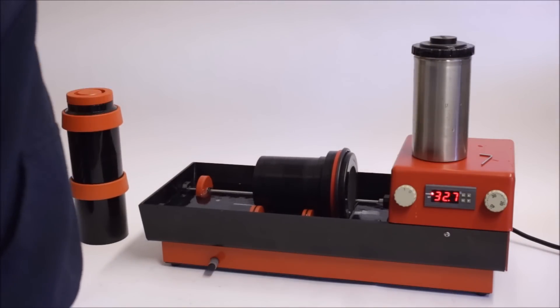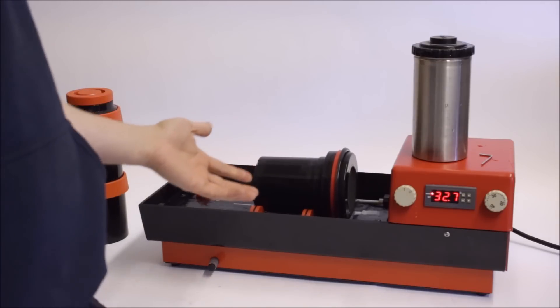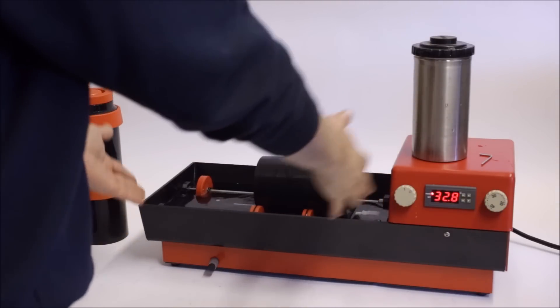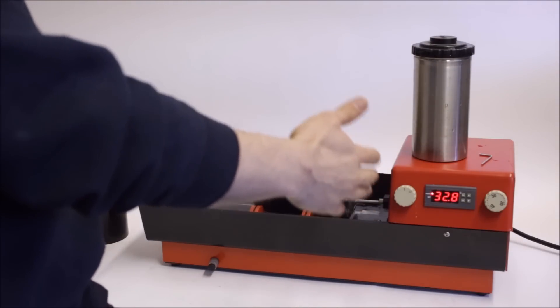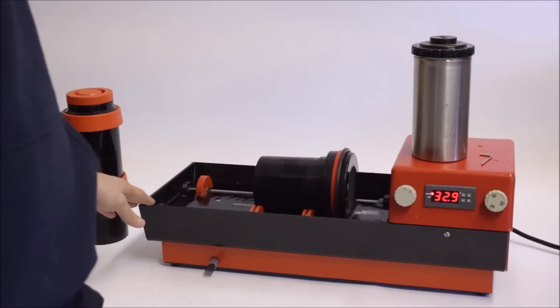A small Jobo tank, a 2500 system Jobo tank. We also run expert tanks on this. The only limit of course is the physical size of the trough, and this is just big enough to run the expert tank 3005 for 8x10 sheet film.